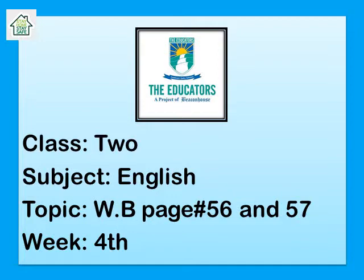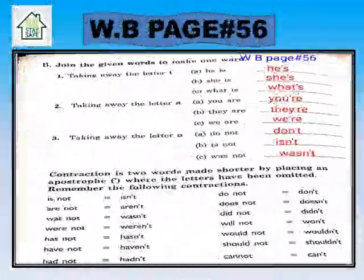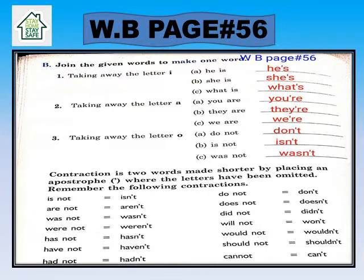Today students, we are going to do workbook page number 56 and 57. We are going to do workbook page number 56, Exercise B. The question is: join the given words to make one word. There are some words like: he is, she is, what is, you are, they are, we are, do not, is not, was not.